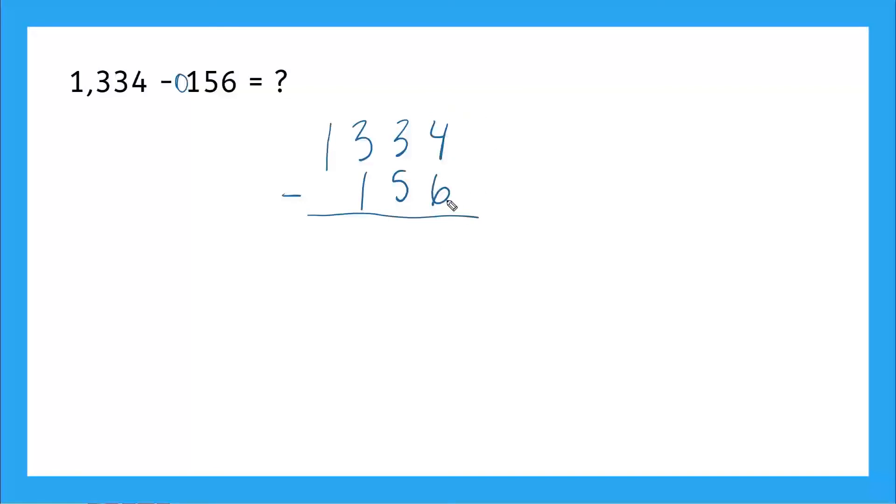We have four minus six. Can we do that? Nope. We have to borrow, right? So I'm going to go next door. I have a three here. So I'm going to take one here from my tens place. This becomes a two and then I'm giving a 10 here to my ones place. So this four becomes 10 plus four, which is 14. So 14 minus six, that will give me eight. Perfect.